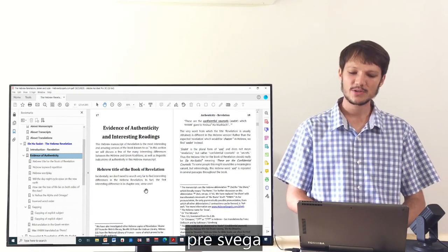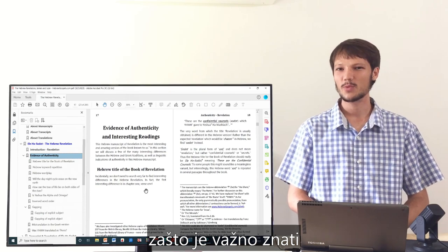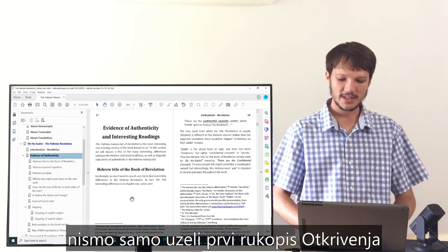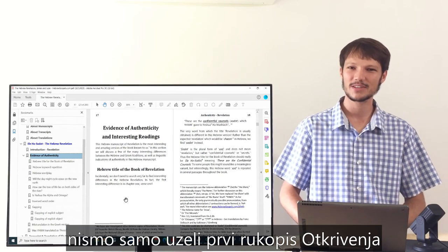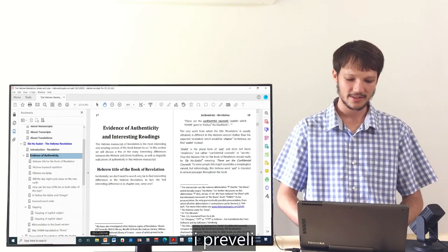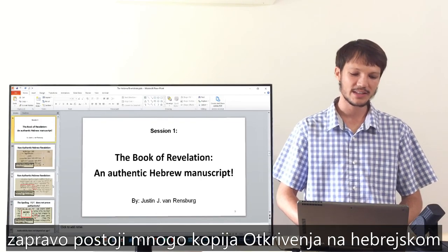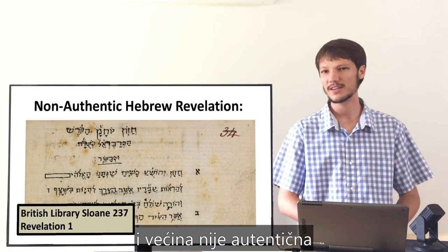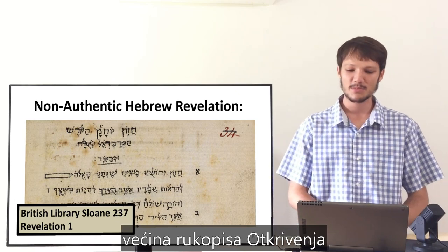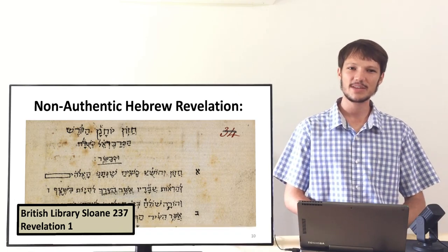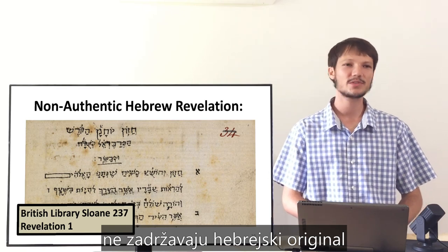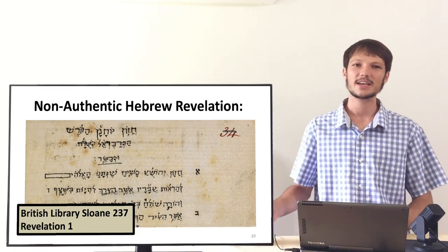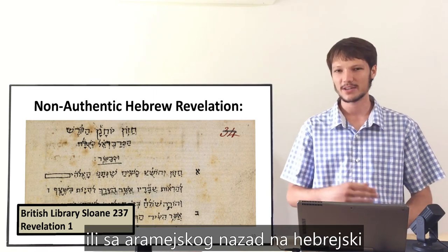Why is it important to know that this Hebrew manuscript is authentic? We did not just grab the first best manuscript of Revelation and translate it. In fact, there are many copies of Revelation in Hebrew, and most of these are not authentic — meaning most manuscripts of Revelation, even if written in Hebrew, do not preserve the original Hebrew text, but rather are translations from Greek back to Hebrew or from Aramaic back to Hebrew.